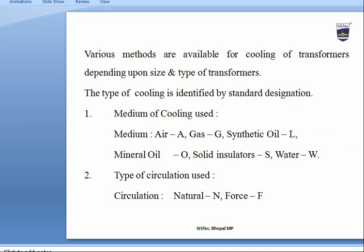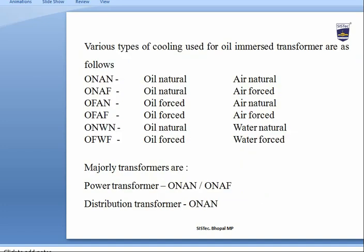Various cooling methods are available depending upon the size and type of transformer. The type of cooling is identified by standard designations: the first medium of cooling — Air (A), Gas (G), Synthetic oil (L), Mineral oil (O), Solid insulators (S), Water (W). Circulation types are Natural (N) and Forced (F).